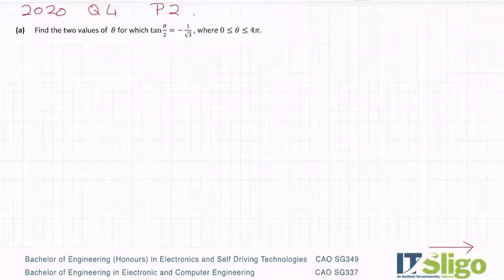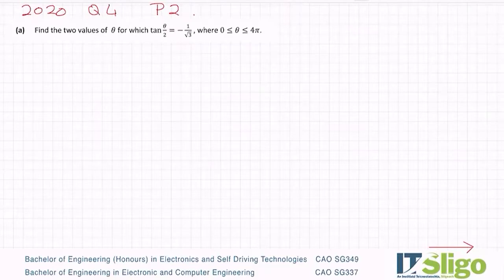The 2020 question on trig was question 4 on paper 2. Part a: find the two values of theta for which tan(θ/2) equals minus 1 over root 3, where 0 is less than or equal to θ is less than or equal to 4π.